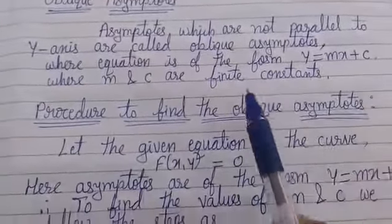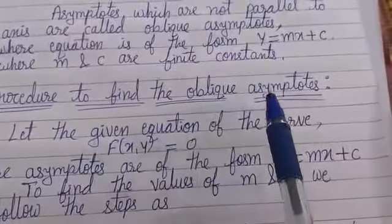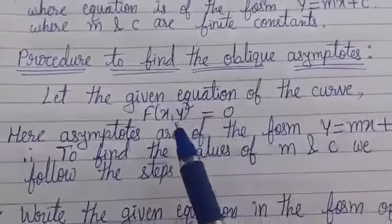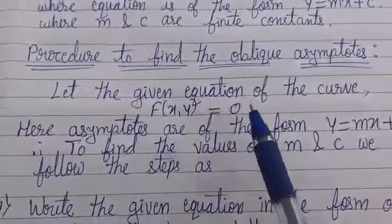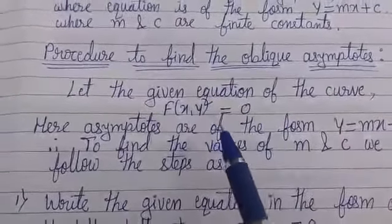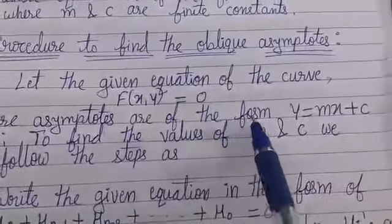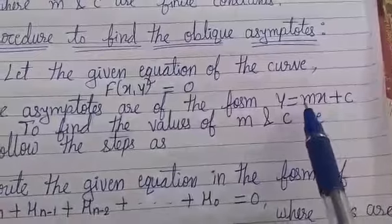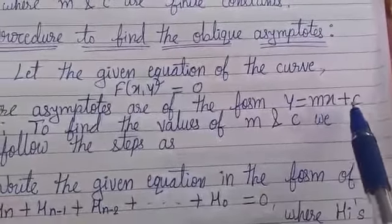Next, the procedure to find the oblique asymptotes. Let the given equation of the curve be f(x,y) = 0. Here asymptotes are of the form y = mx + c, so we have to find the values of m and c.